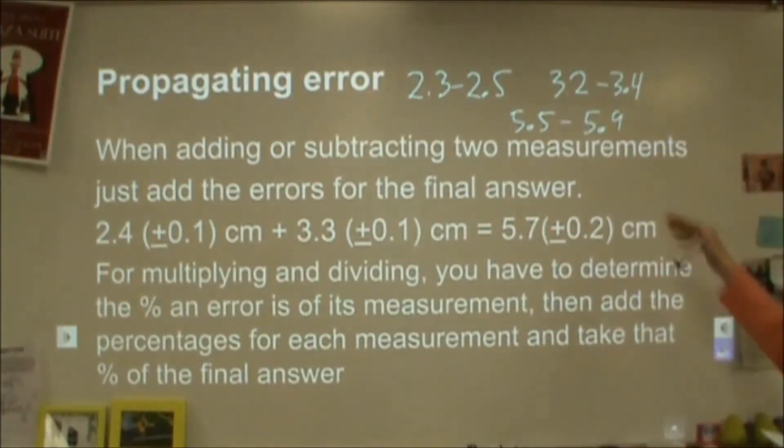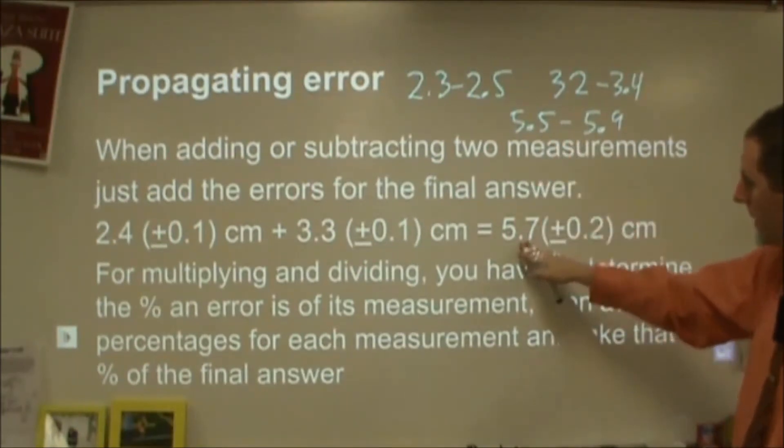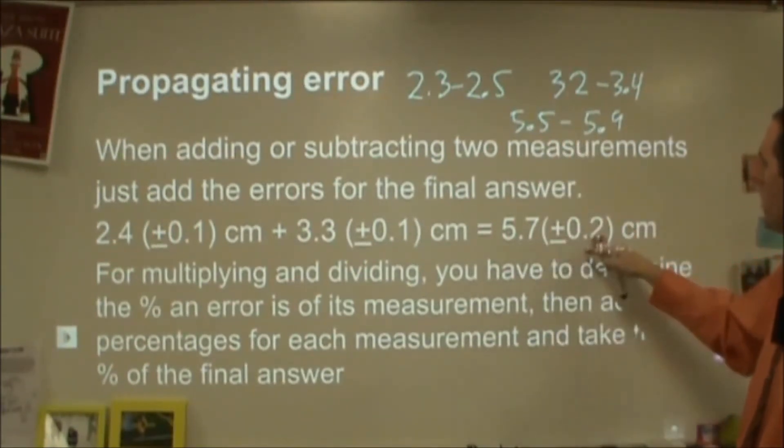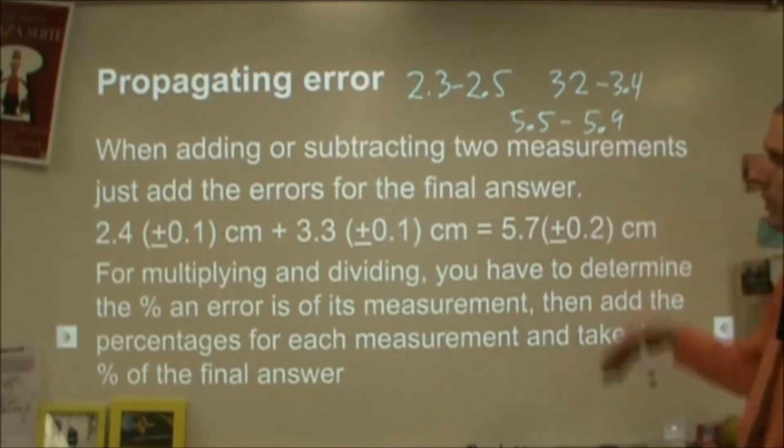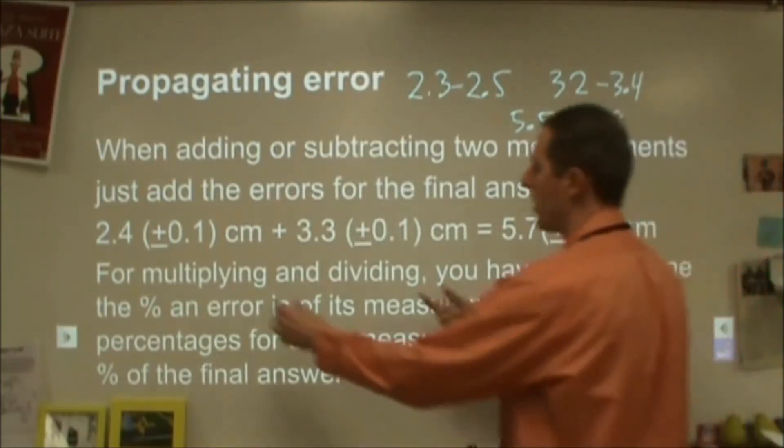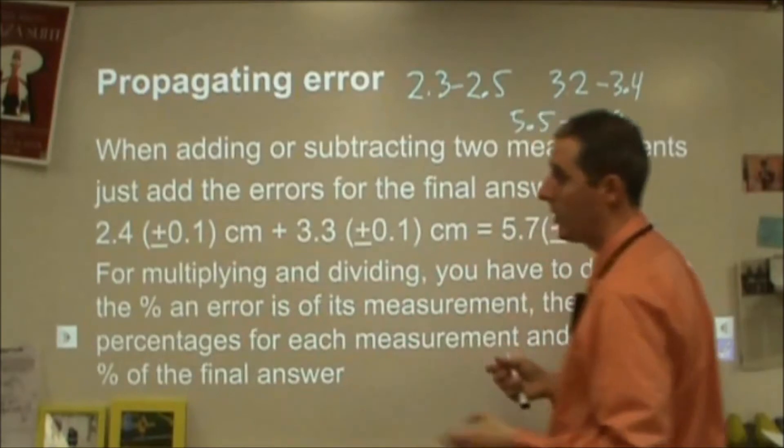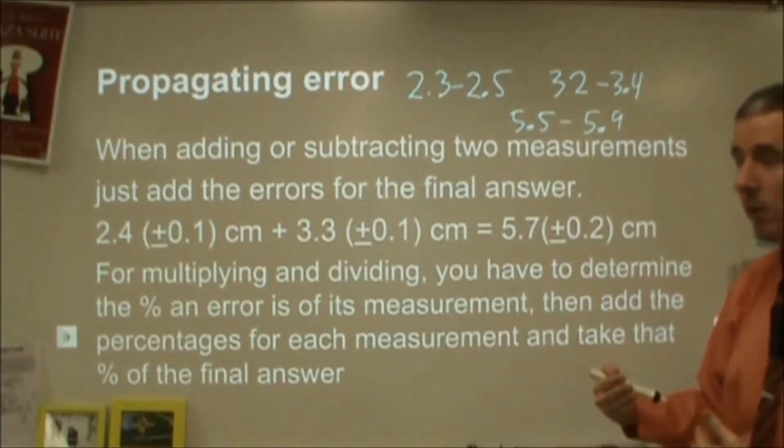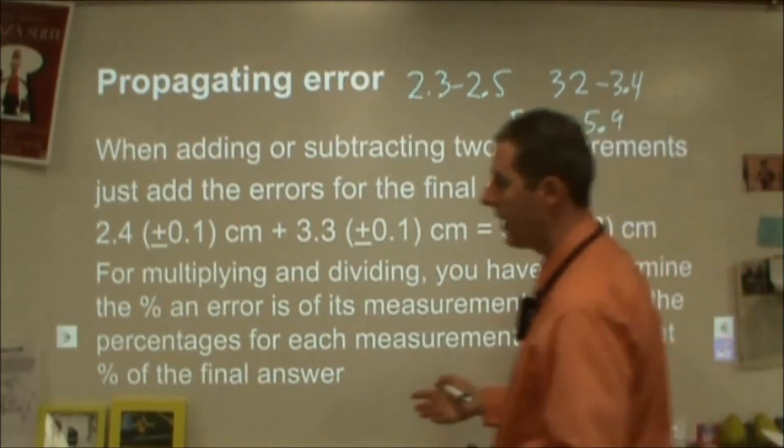So the extremes of that lead me to this, which according to my answer is perfect: 5.7 (±0.2), 5.5 to 5.9. So for adding and subtracting, all you do is just combine the two different errors. And subtracting, you do add them together because they can both be off by that amount.